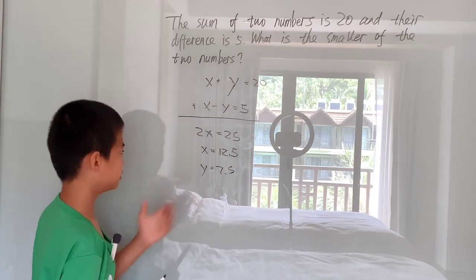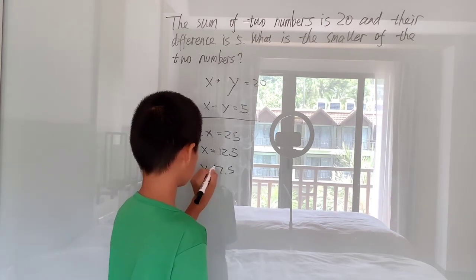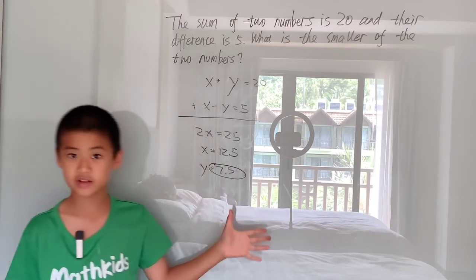With the smaller of these two numbers, well, if one's 12.5, one's 7.5, well, obviously, 7.5 is our answer.